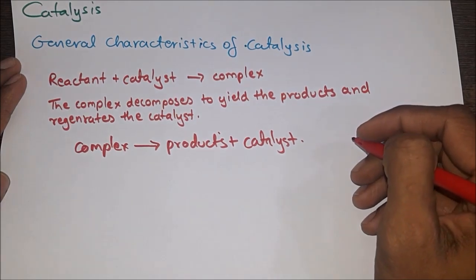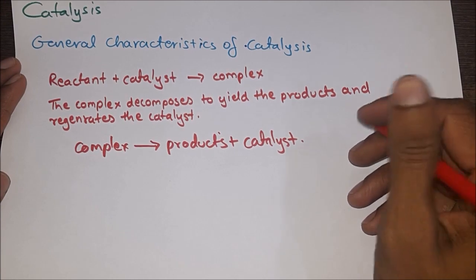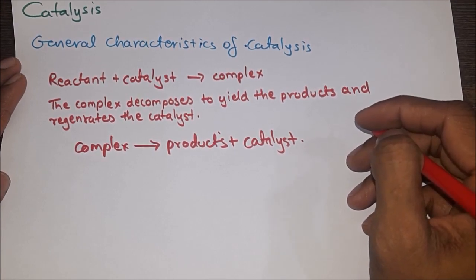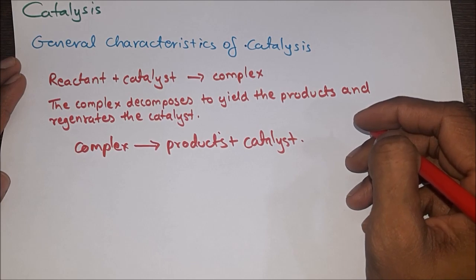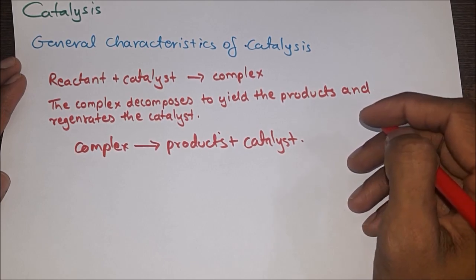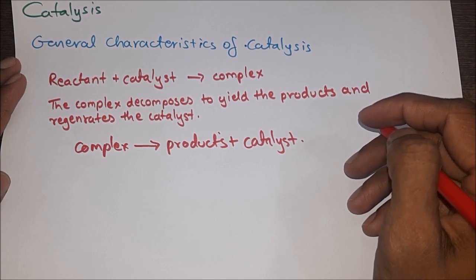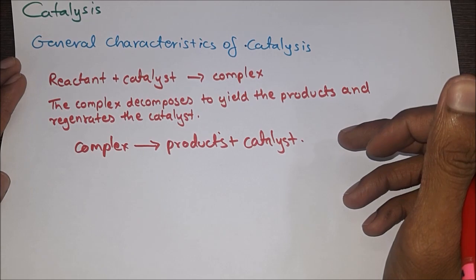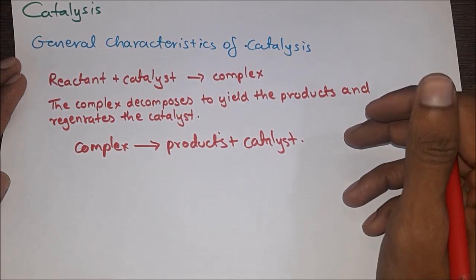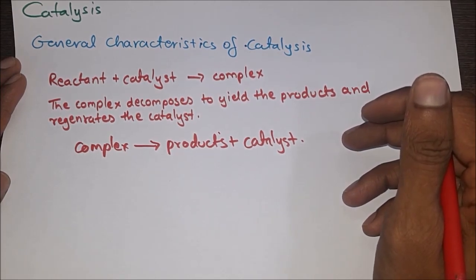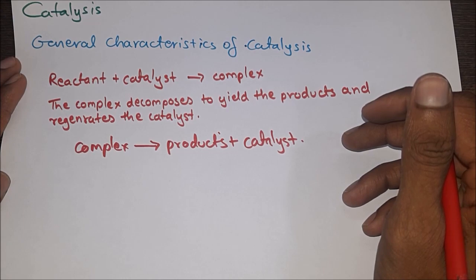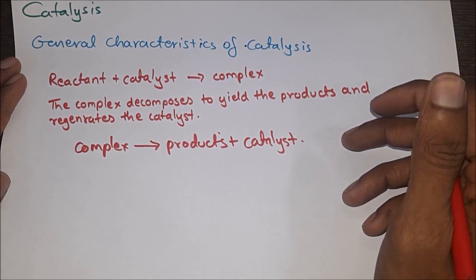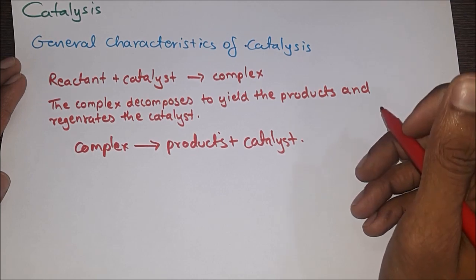Because the catalyst is recovered unchanged at the end of the reaction, it is not consumed. In a reversible reaction, a catalyst increases the rate of both forward and reverse reaction equally. Hence the position of equilibrium is not influenced and the value of the equilibrium constant is not affected by the presence of a catalyst. An extremely small amount of catalyst causes a considerably large increase in the rate of reaction. The activation energy of a catalyzed reaction is always lower than that of the same uncatalyzed reaction, implying that the catalyst makes the reaction proceed by a path of lower activation energy. The catalyst does not affect the energies of reactants and products — hence these energies are the same for both catalyzed and uncatalyzed reactions.